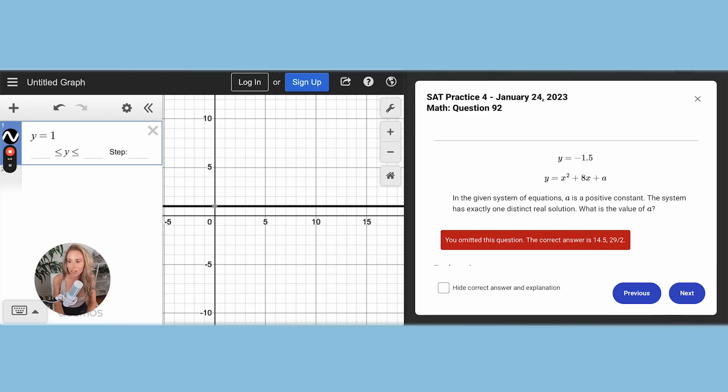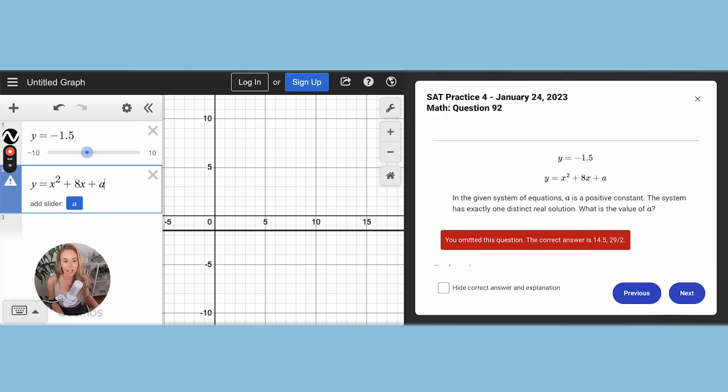I'm going to type in these equations. And I'm going to add a slider for the A. Because what it's asking is, it says the system has exactly one distinct real solution.